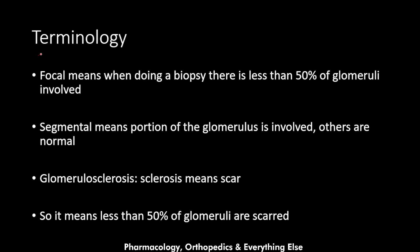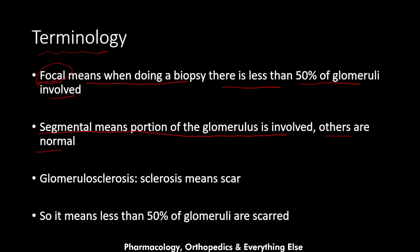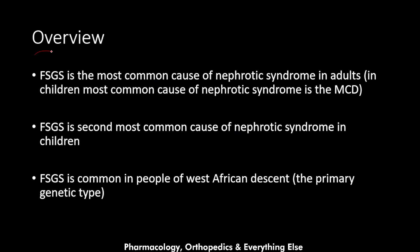Let's start with terminology. Focal means that when doing a biopsy, less than 50% of glomeruli are involved — the disease doesn't affect the whole kidney. Segmental means only a portion of the glomerulus is involved while other parts are normal. Glomerulo refers to the glomerulus and sclerosis means scar. So the whole term means less than 50% of glomeruli are scarred.